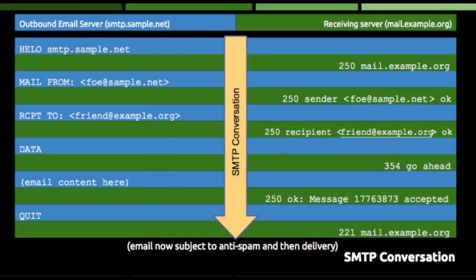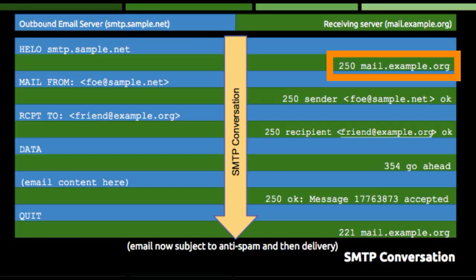Back from the side note. The numeric code that the receiving server uses to say okay, go ahead, is 250. In response to the hello command, the receiving server returns 250 and includes its own server name. This is like replying to "hello, my name is outbound email server" with "hi there, my name is receiving server. Let's talk."